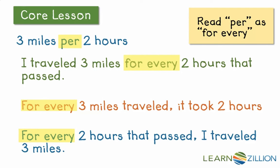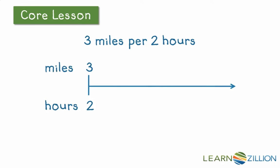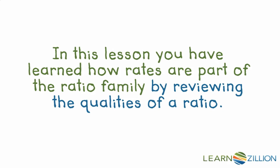I think "for every" has a more illustrative meaning — you can see the constant pattern of this rate, which is why it's part of the ratio family in the first place. Three miles per two hours doesn't just mean one set of two hours and three miles. You could double it: six miles per four hours, or nine miles per six hours. It's that idea that the rate is constant. Rates, like ratios, have a constant pattern — that's what makes them part of the ratio family. In this lesson, you have learned how rates are part of the ratio family by reviewing the qualities of a ratio.